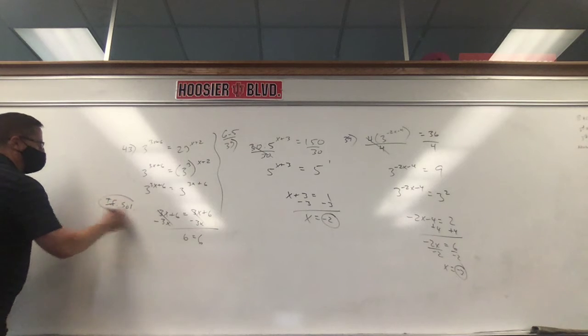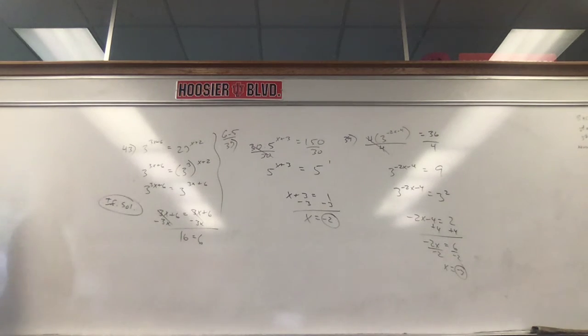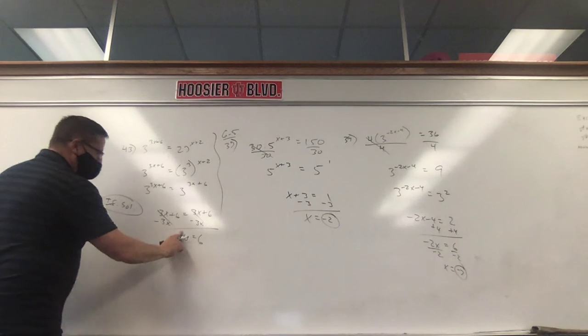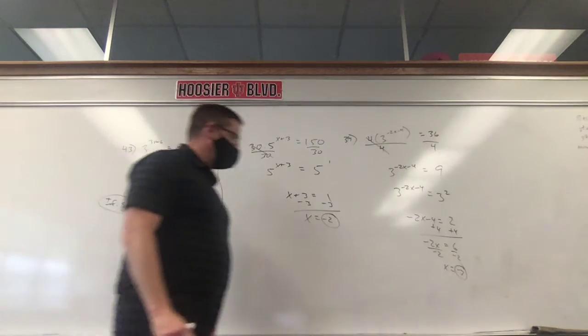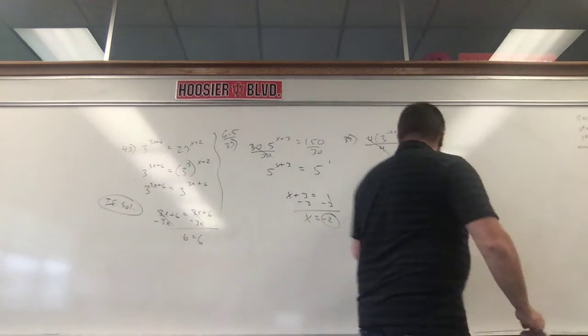Now, what if it would have said 6 equals 16? Then it's never. There would be no solution. That's never true. 6 is never equal to 16. So there would be no solutions. Keep that in mind. All right. One more to go.